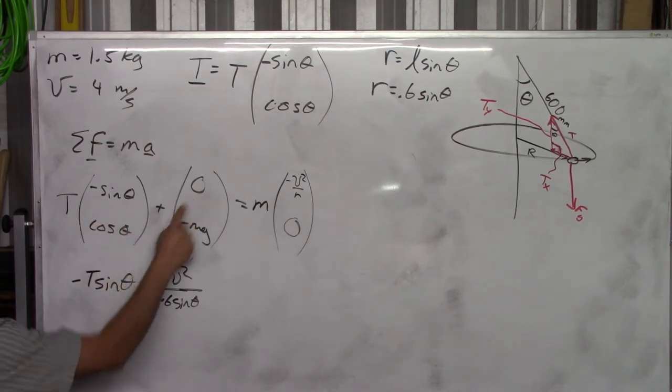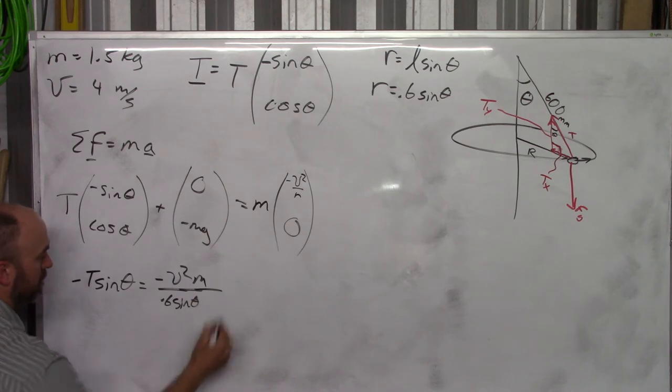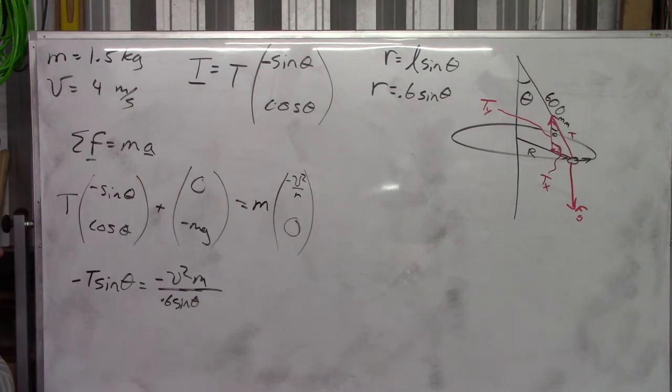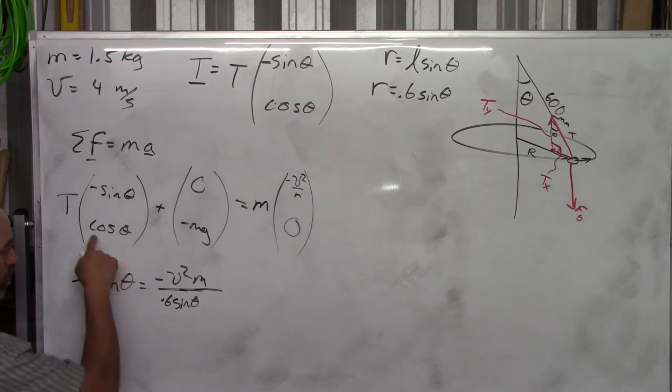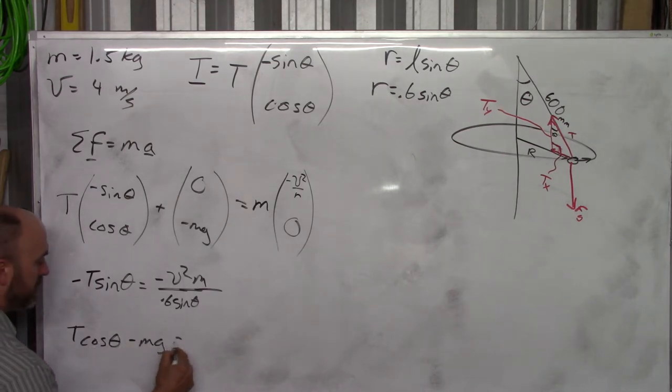Plus 0 equals that. Oh, I forgot my mass. That's important. That's important. There we go. Okay. And then the y part is going to give me this. T cos theta minus mg equals 0.